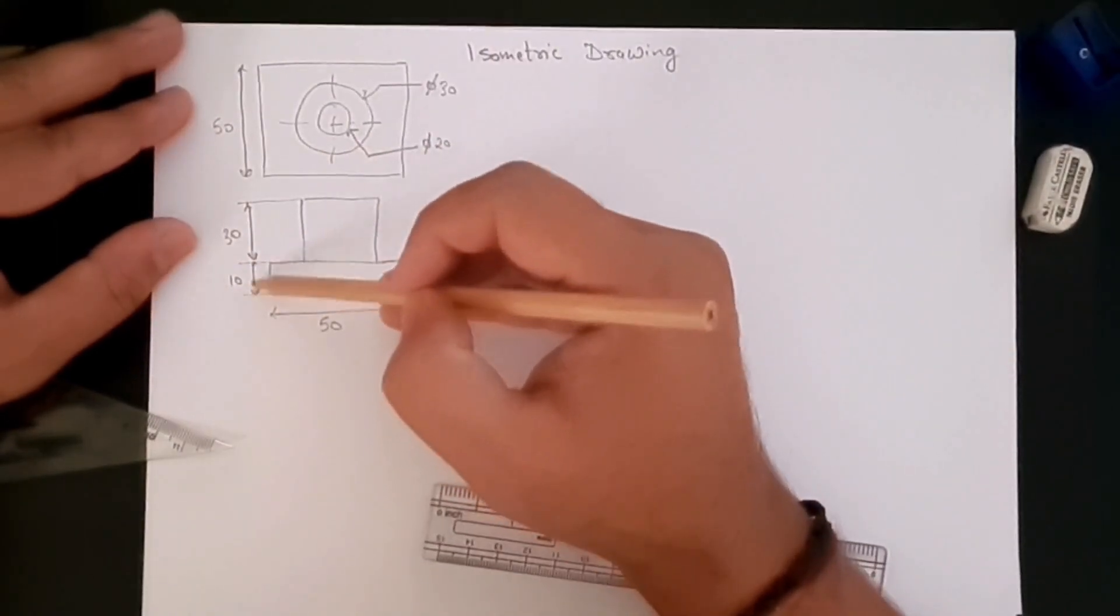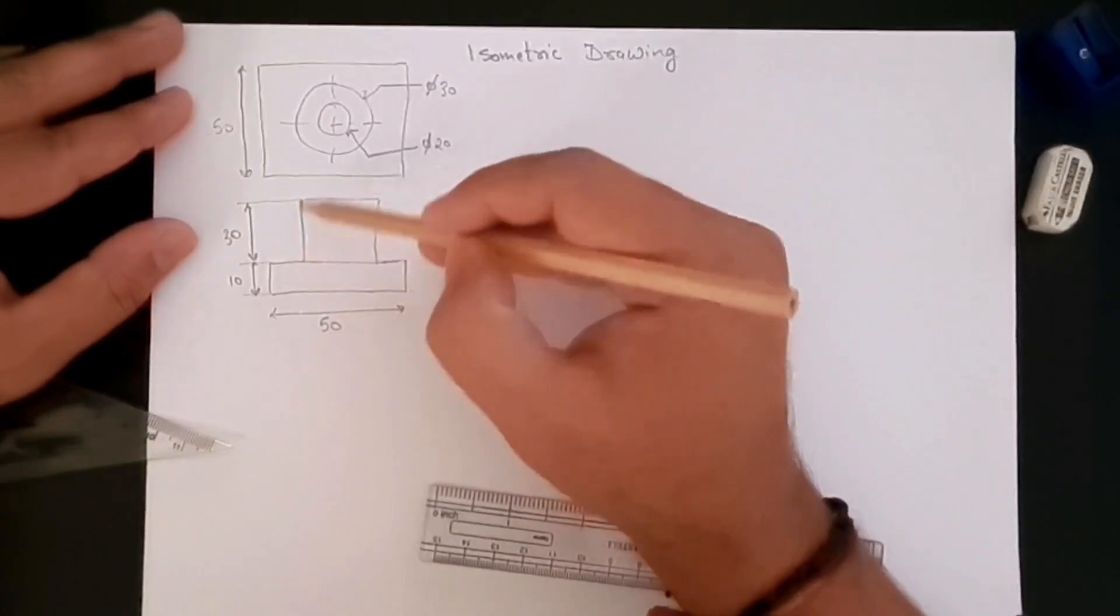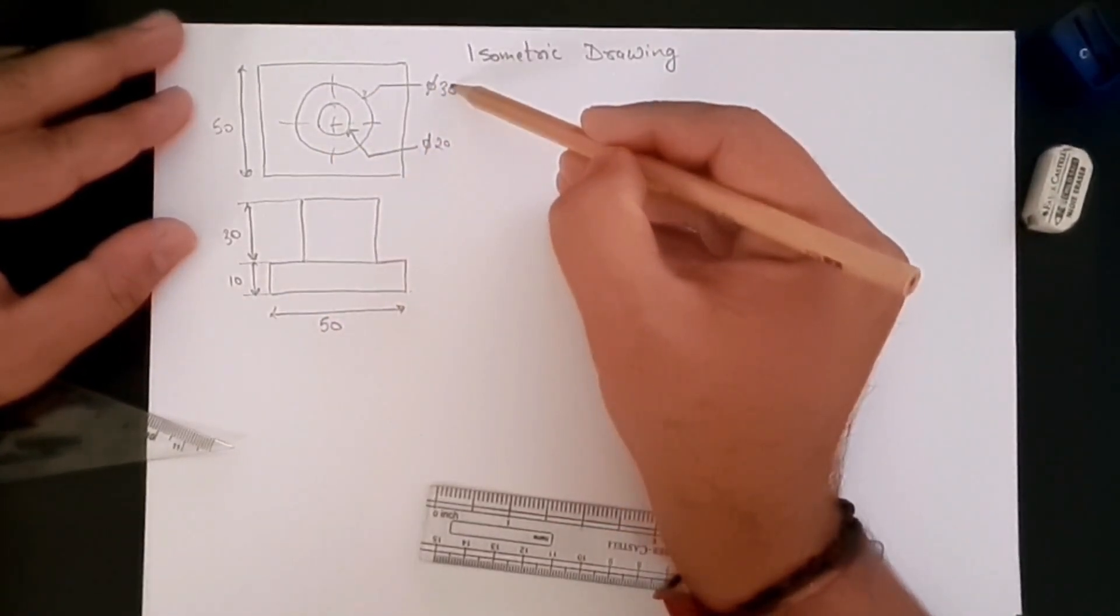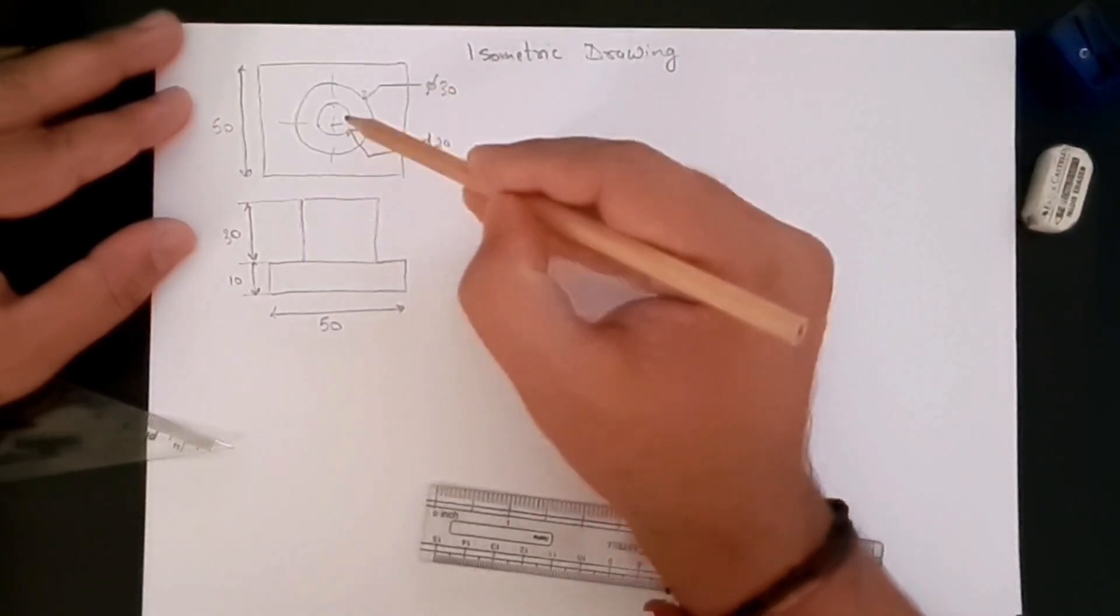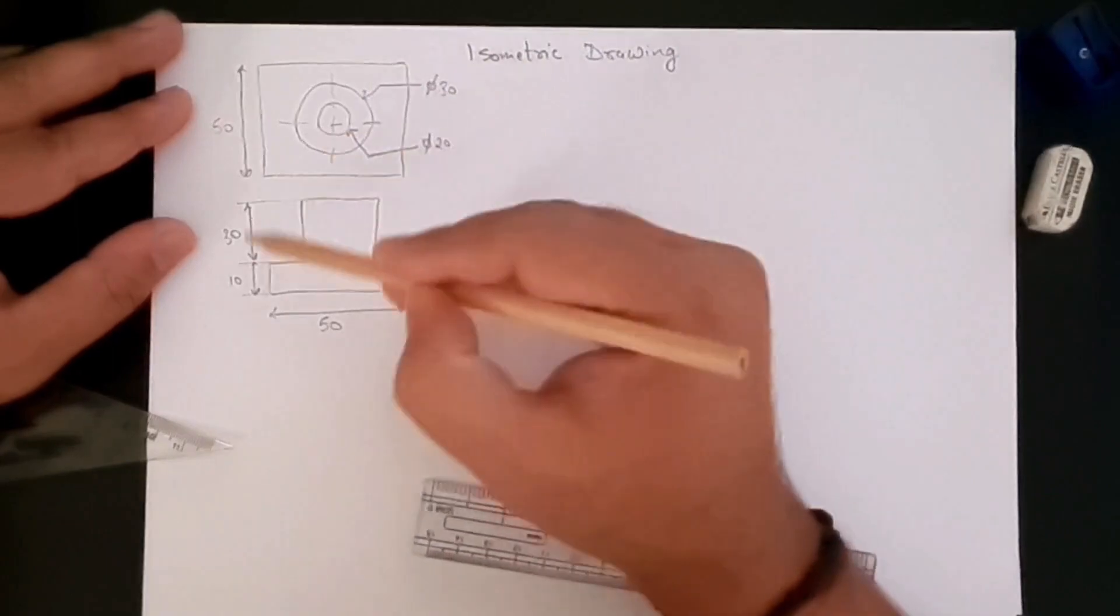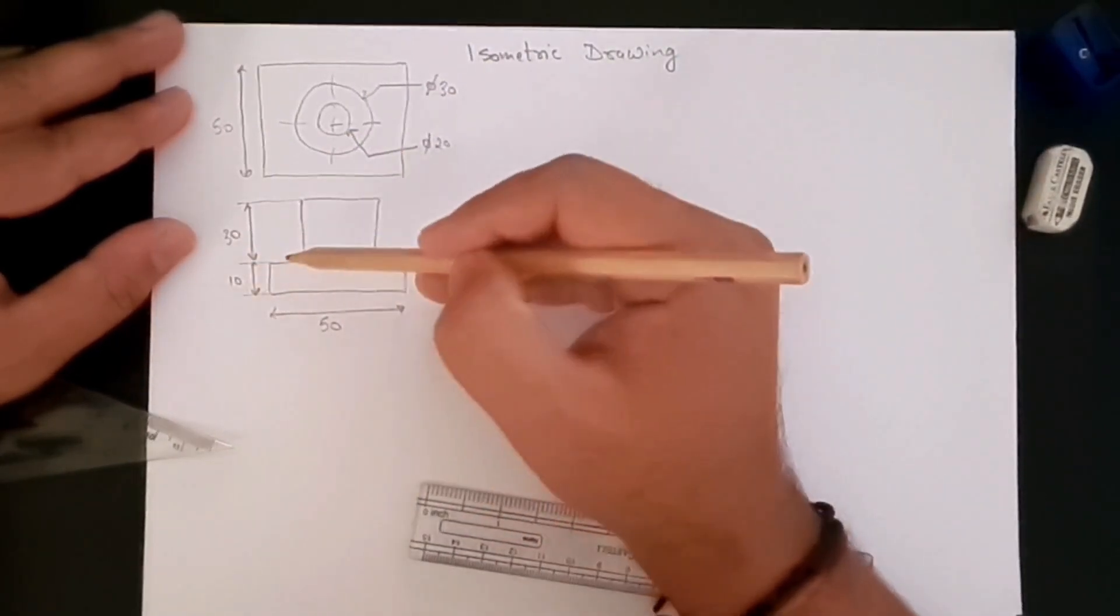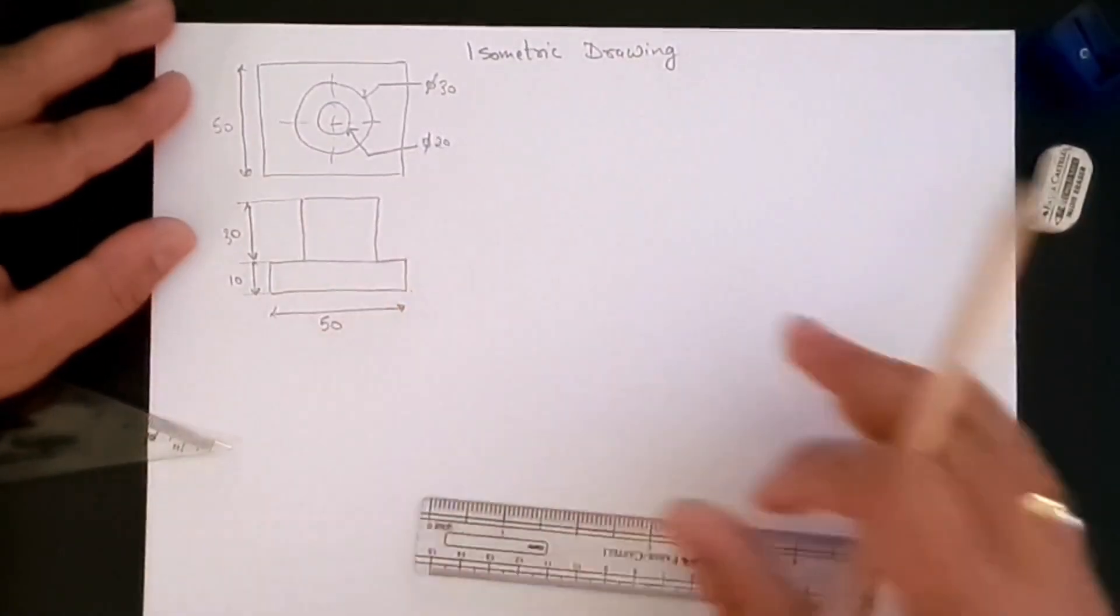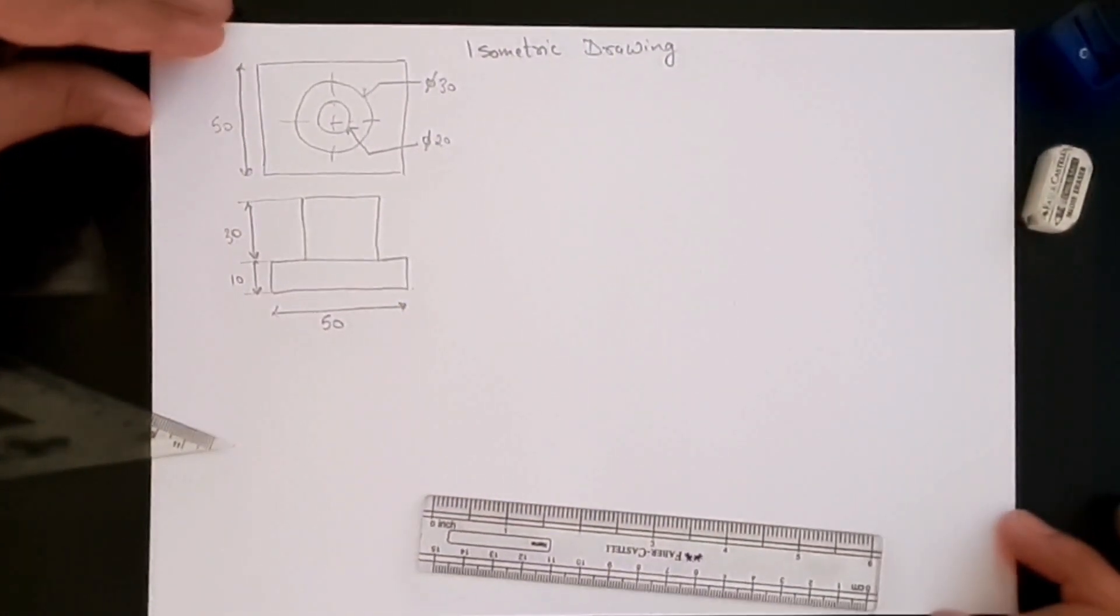Now that part is having a base of 50 by 50 square, a 10 millimeter thick plate, and then it has a circle which is having a diameter of 30 millimeters and it has a hole which has a diameter of 20 millimeters. The height of that cylinder is 30 millimeters as well.